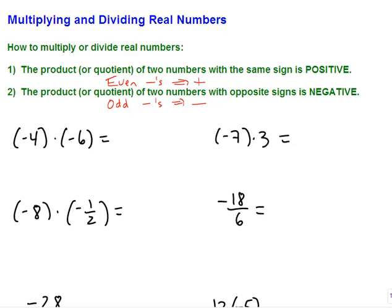Let's try some examples. If I have negative four times negative six — since I have a negative times a negative, that's an even number of negatives — the answer is going to be positive. Four times six is twenty-four. If I have negative seven times three, there is only one negative, so the answer stays negative. And seven times three is twenty-one.